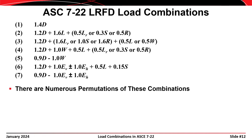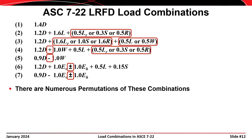There are several other permutations of these load combinations that also need to be considered. For example, in load combinations 4, 5, 6, and 7 we have plus or minus signs indicating the directionality of the wind loads and the horizontal earthquake loads. In load combination number 3, we have 0.5 L or 0.5 W. And in load combinations 2, 3, and 4 we need to consider either the roof live load, the snow load, or the rain load.